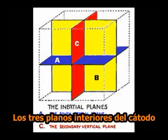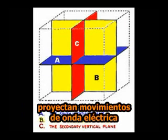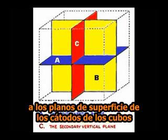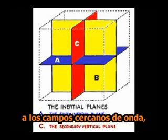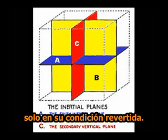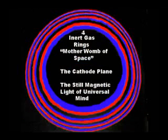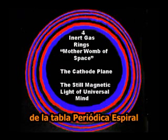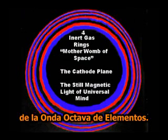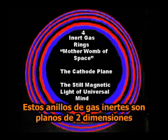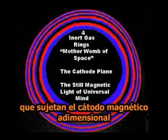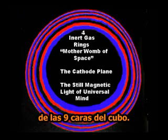The three interior cathode planes project electric wave motions to the surface cathode planes of cubes where they are radared back, and also projected into the neighboring wave fields only in their reverse condition. The four inert gas rings contain within them all nine inert gases of the spiral periodical table of the octave wave of elements. They are the foundations for all elements.